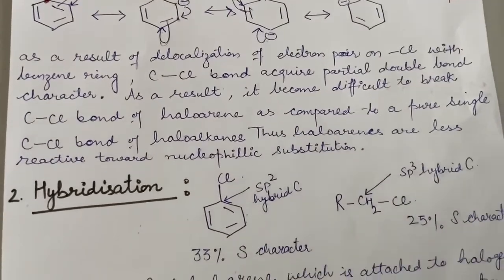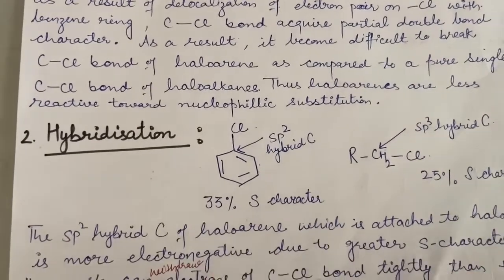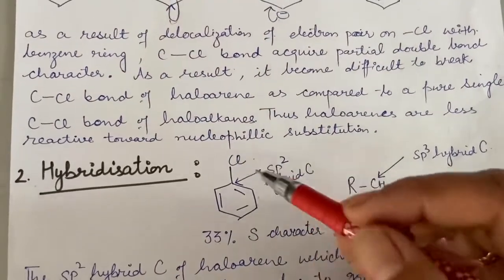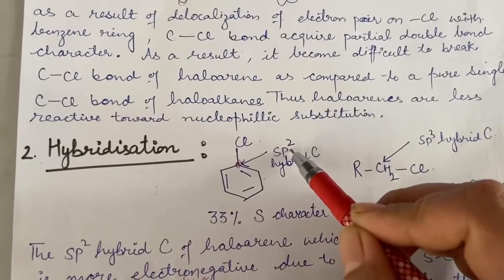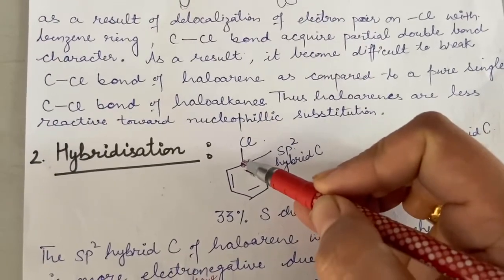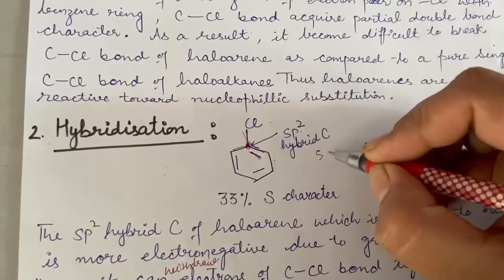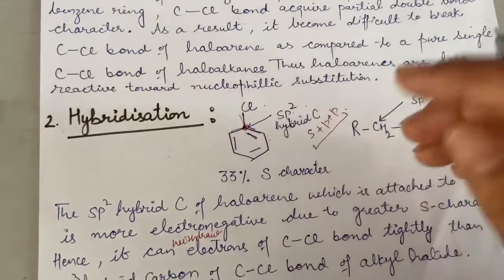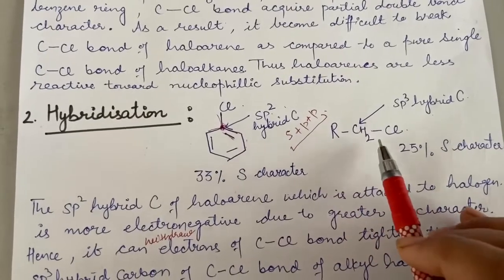The next point that favors lesser reactivity towards nucleophilic substitution is the hybridization of the carbon which carries the halogen atom. The carbon attached to the halogen in haloarene has SP2 hybridization. We know pi bonds are not included in hybridization, so counting only the sigma bonds: this carbon forms 3 sigma bonds. For 3 sigma bonds, one S orbital and 2 P orbitals are used, resulting in SP2 hybridization, as compared to SP3 hybridization of the carbon in haloalkane.